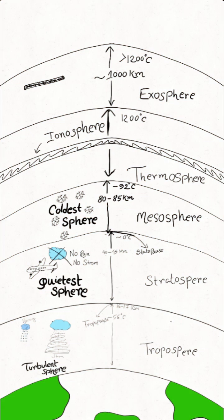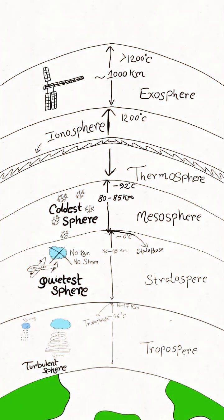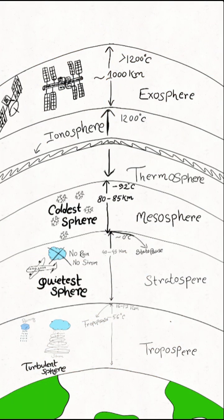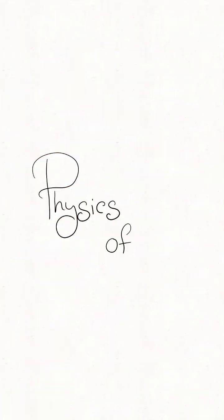Last one is the exosphere, which is situated 1000 kilometers away from the sea level, and the highest temperature is more than 1200 degrees Celsius. Here we can observe the International Space Station (ISS) and many kinds of artificial satellites.